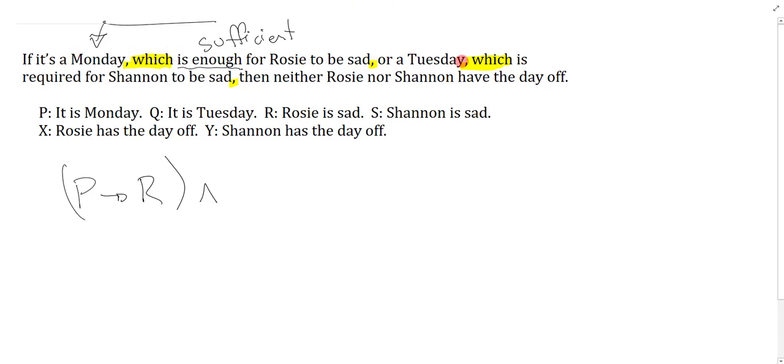Now I'm going to do the next non-restrictive clause which says which is required for Shannon to be sad. Required means necessary. So the necessary condition Tuesday has to be the consequent. So I know I'm going to say arrow it is Tuesday, and the necessary condition is talking about Shannon being sad, so that's S. I want to preserve my connectives and because these are strings of non-restrictive clauses I just use and over and over again.